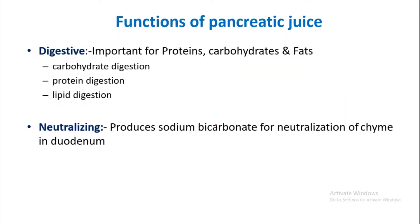Functions of pancreatic juice: it has a digestive function, important for protein, carbohydrate, and fat digestion. It also has a neutralizing effect — it produces sodium bicarbonate to neutralize the acid chyme in the duodenum. The chyme from the stomach contains HCl, and the sodium bicarbonate in the pancreatic juice neutralizes this acidic chyme, raising the pH to around 8.0, compared to the stomach pH of around 1 to 2.